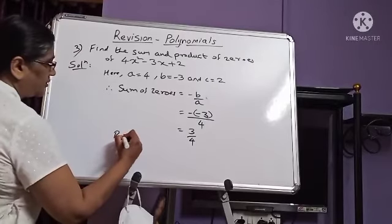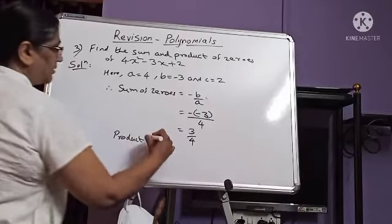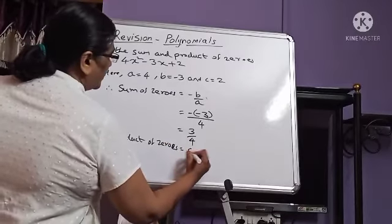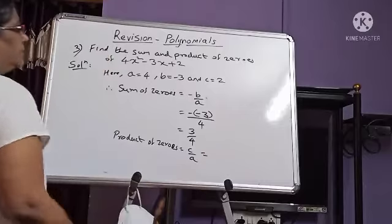And product of zeros, what is the value? C upon A, that is equal to 2 upon 4.